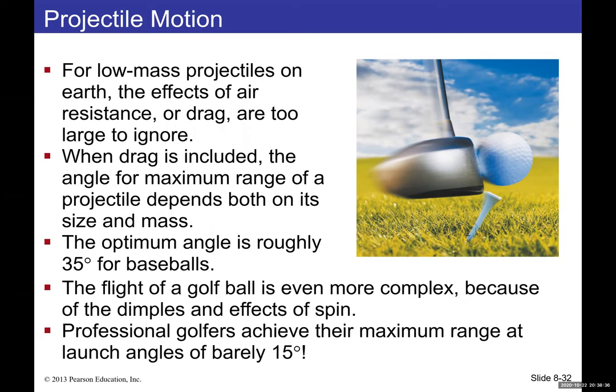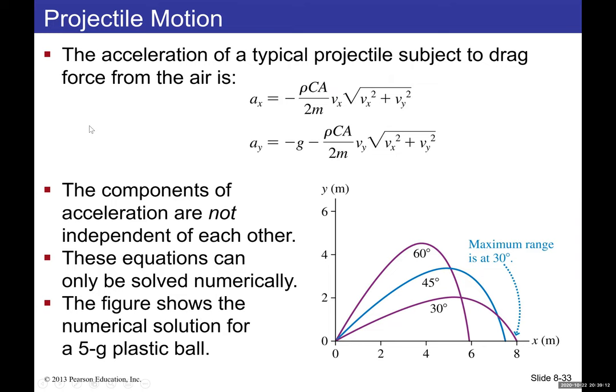Including drag, the optimal angle drops to about 35 degrees for a baseball. For a golf ball, the dimples and spin make it even more complex, and professional golfers achieve maximum range at only about 15 degrees. Adding more parameters makes the system increasingly complex.